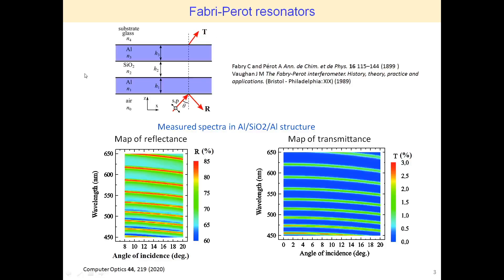Fabry-Perot resonators are represented by two parallel mirrors separated by a dielectric medium at a certain distance from each other. The metal-insulator-metal planar structures can be considered as Fabry-Perot resonators with absorbent mirrors.